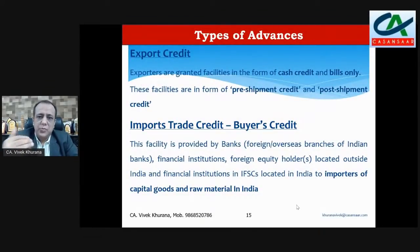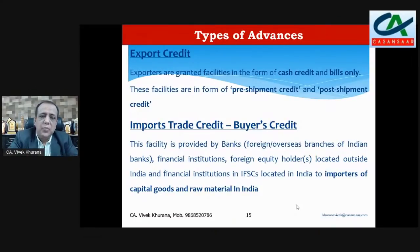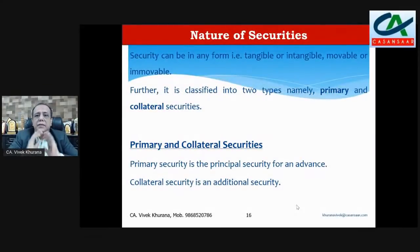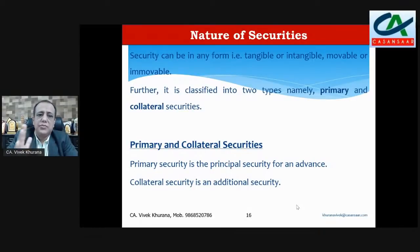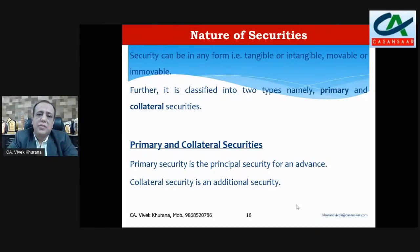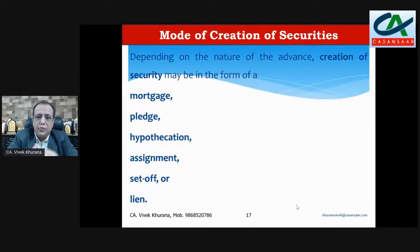Export credit is funding to exporters. It can be pre-shipment and post-shipment advances. Then there is import credit for importers. Banks will not generally provide loans without any security because the bank also needs some guarantee for repayment. Security can be tangible or intangible, movable or immovable, and can be primary or collateral. Primary security is the principal security and collateral security is additional security.